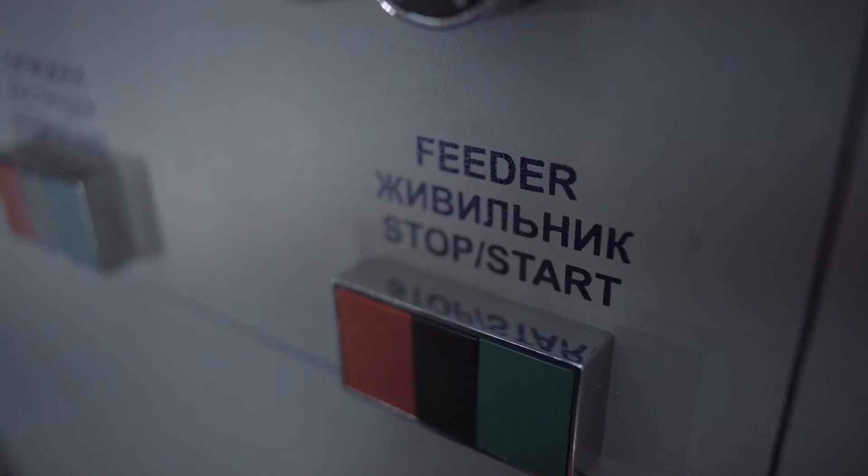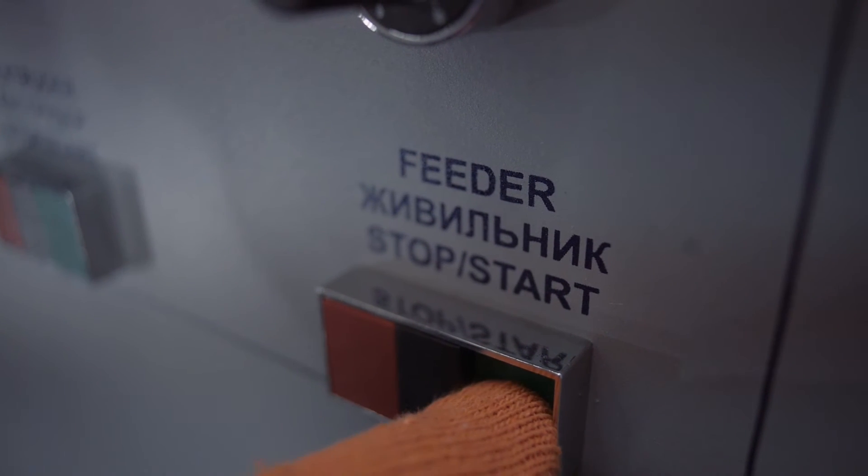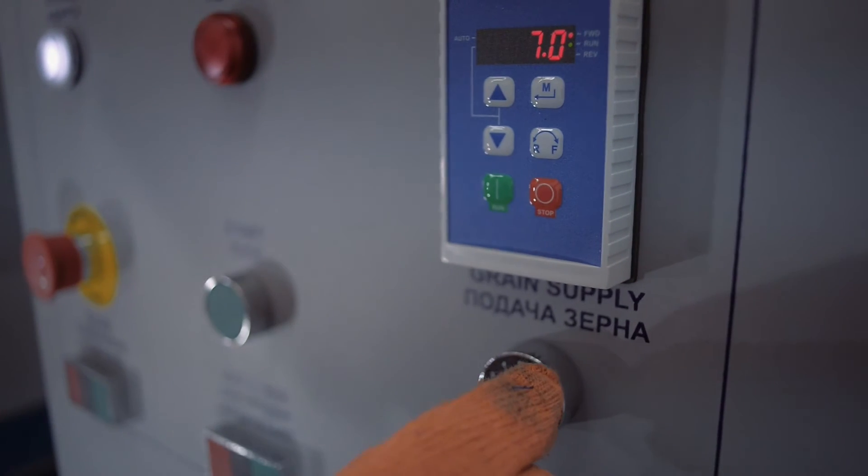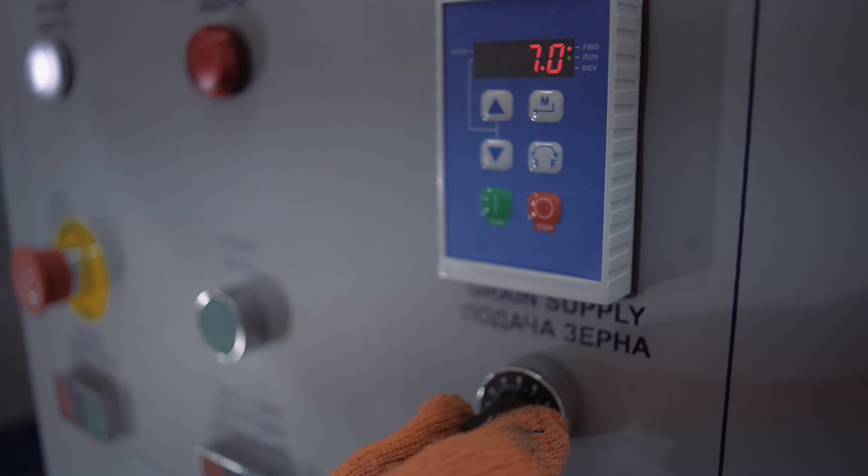How to start the screw feeder? Turn on the exhaust ventilation connected to the screw feeder. Start the screw feeder using the control panel. Feed the raw material into the loading hopper.